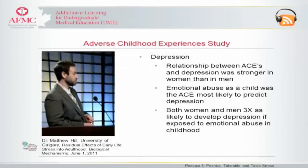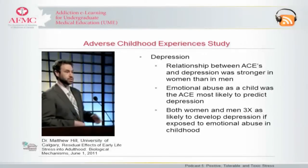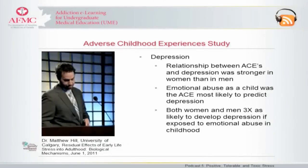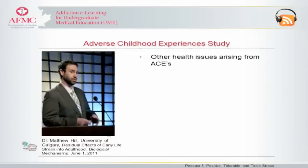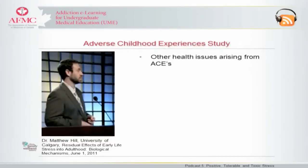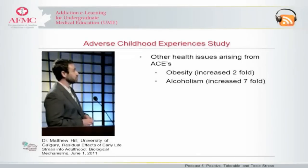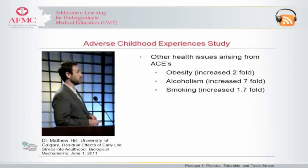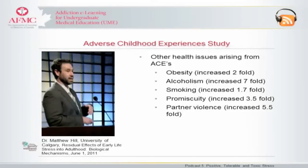Forms of familial dysfunction and isolation were not significantly associated with depression, so the depression findings are very linked to early life abuse, emotional neglect, and maltreatment. Other health risks from these studies include a two-fold increase in obesity, a seven-fold increase in alcoholism, a 1.7-fold increase in smoking, a 3.5-fold increase in promiscuity, and a 5.5-fold increase in intimate partner violence — a clustering of negative behaviors following early life adversities.